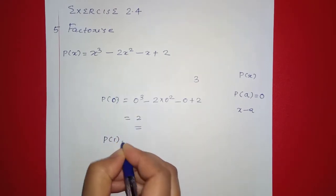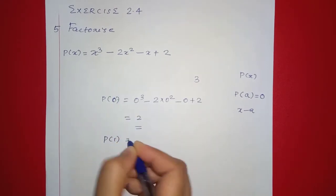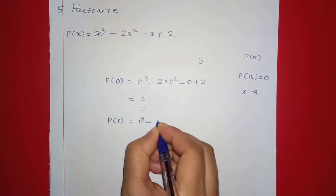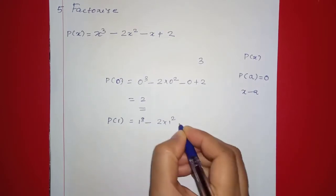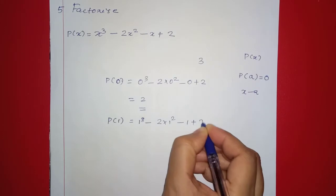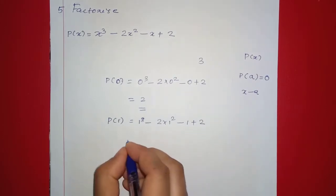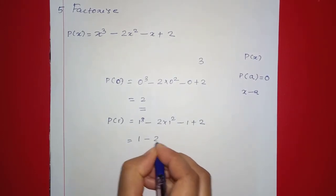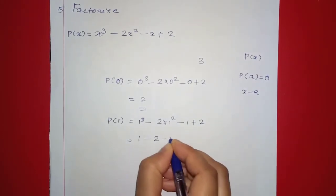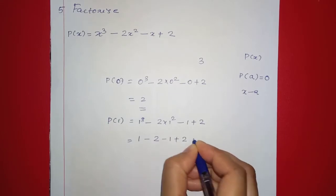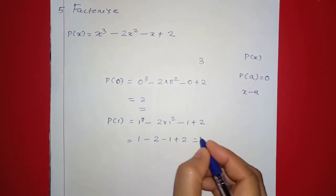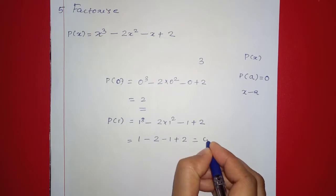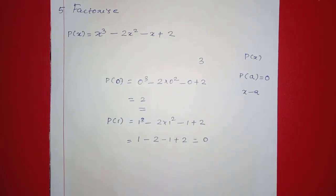Next value: P of 1 is equal to 1 raised to 3, minus 2 into 1 squared, minus 1, plus 2. That is equal to 1 minus 2 minus 1, plus 2. That equals 1 minus 1, which is 0, minus 2 plus 2.